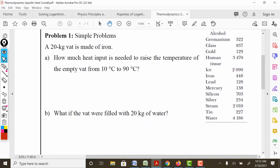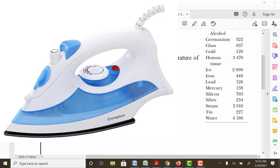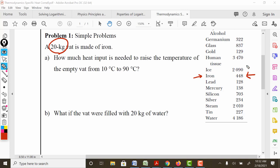Let's go ahead and do an example. So here we have a 20 kilogram vat, which is a container that holds another material. It's made of iron. So here we have iron right here at 448 joules per kilogram Celsius. How much heat input is needed to raise the temperature of the empty vat from 10 degrees Celsius to 90 degrees Celsius?